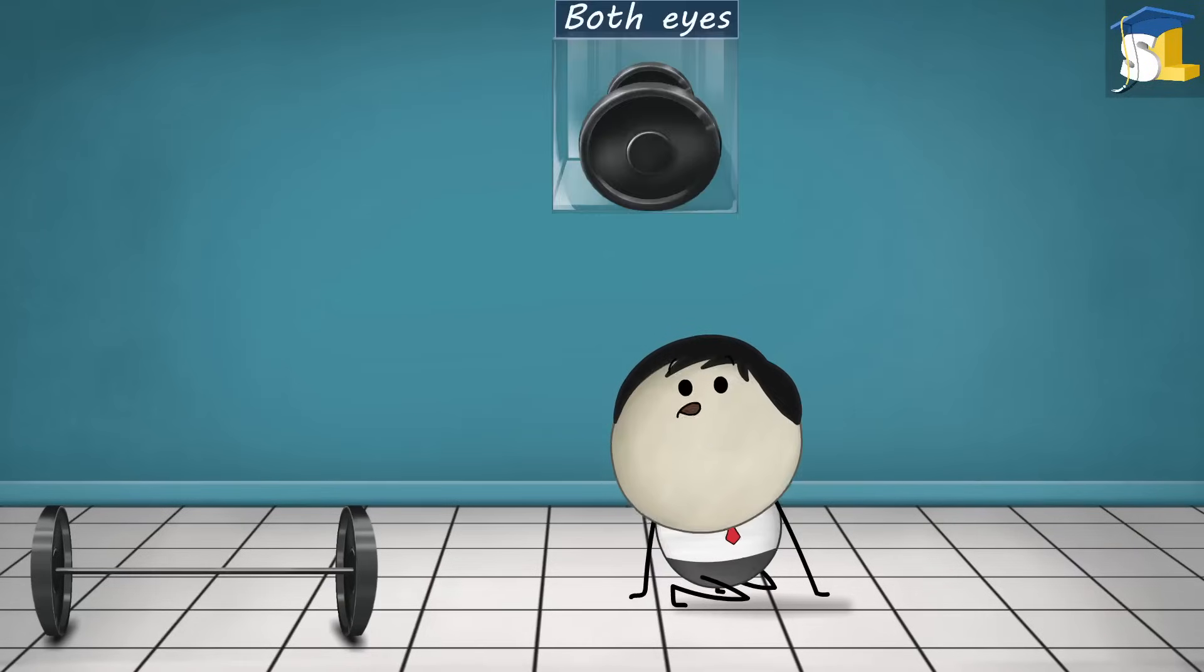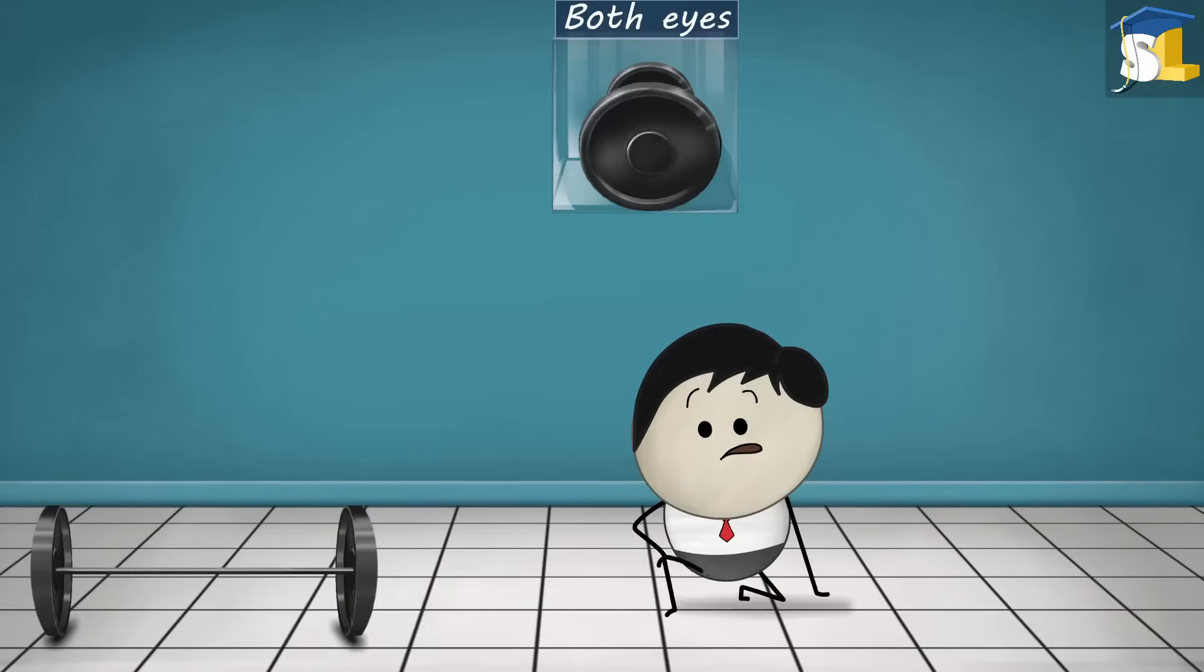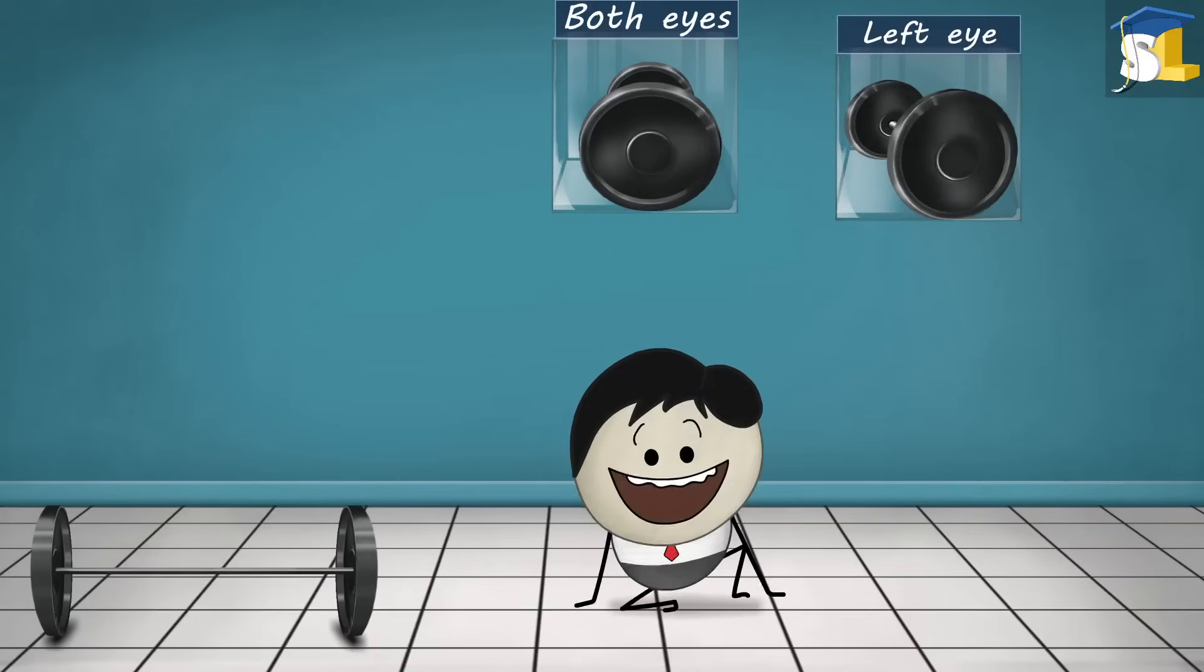Both your eyes see the object like this. Now, when you see only with your left eye, the object will look like this. While when you see only with your right eye, the object will look like this.